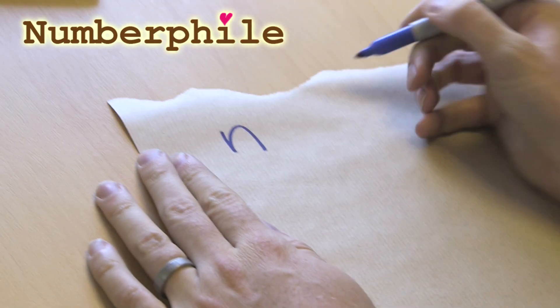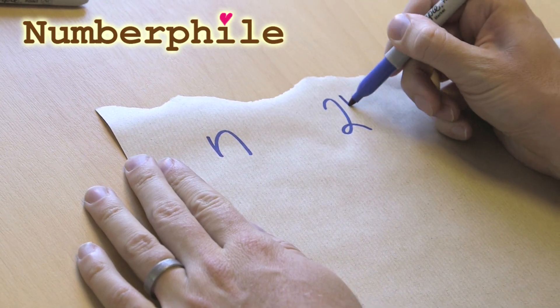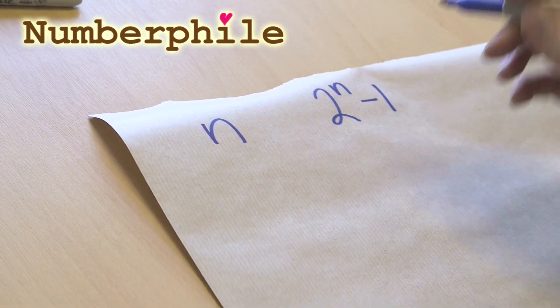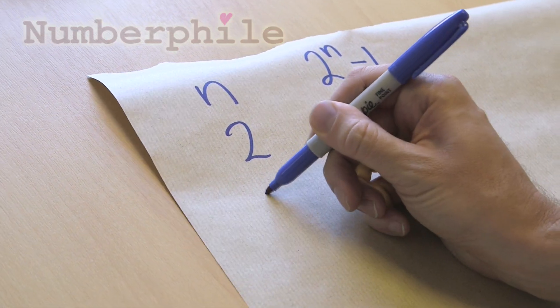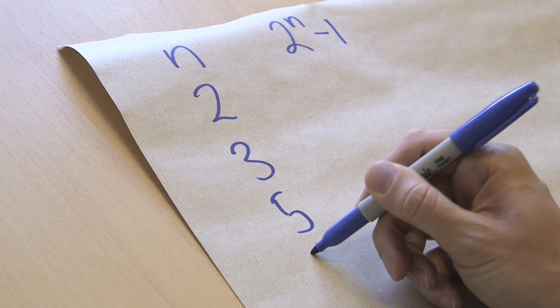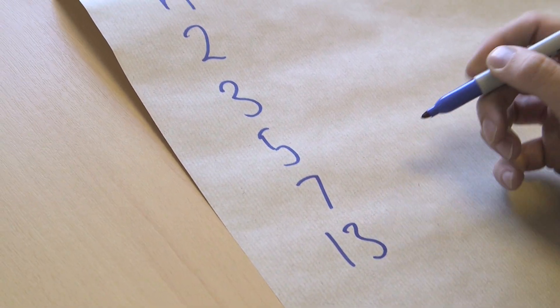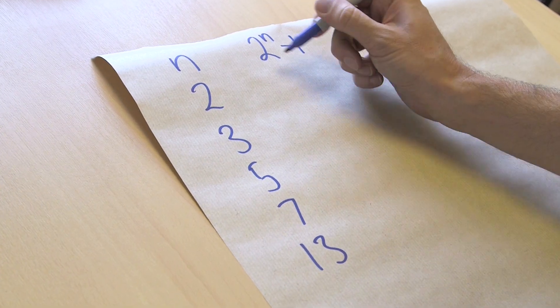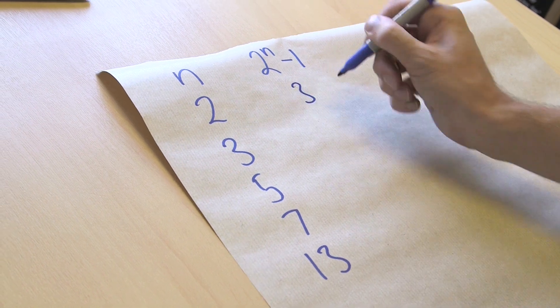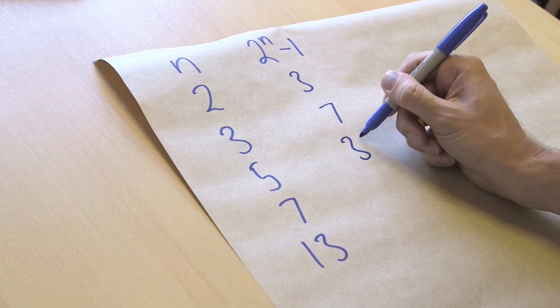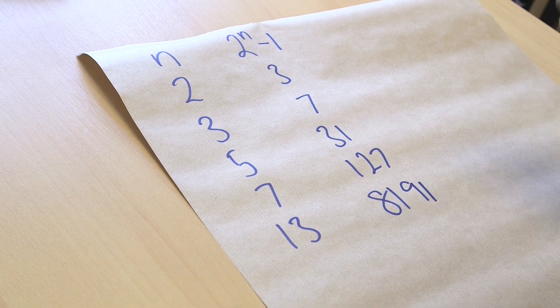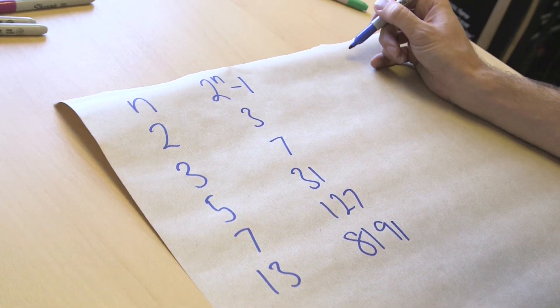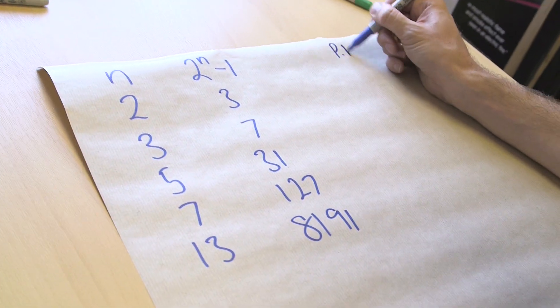Once again, we're going to have n and we're going to have 2 to the n minus 1, but I'm not going to bother with the ones that don't work. I'm only going to have the ones that work, which is 2, 3, 5, 7, and 13, and they give us the Mersenne primes. 2 gives us 3, 3 gives us 7, 5 gives us 31, 127, 8,191.